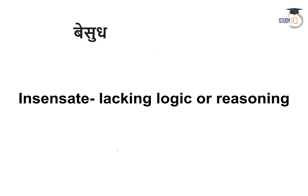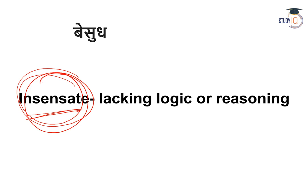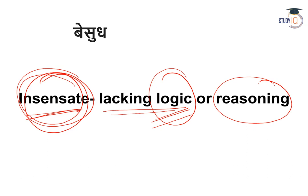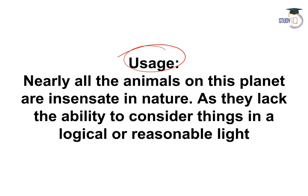Moving on to insensate. Insensate shabd ka arth hota hai — aisi chiz ya situation jahan koi logic apply nahi ho raha ho, woh logical nahi hota, koi sense nahi banta, nonsensical ho jata hai. So, insensate means something that is lacking logic or reasoning — beesudh ho jana, sudh ka koi dhyan na rakhna.